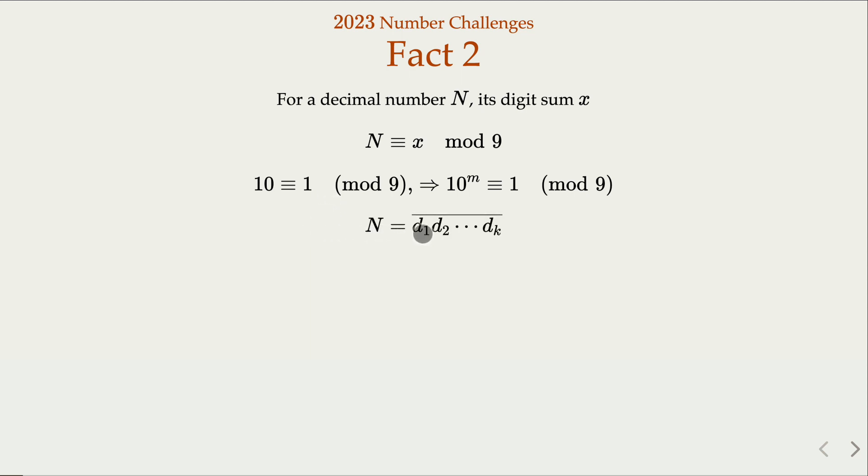Since we're dealing with decimal numbers, we have this equation here. Let's say digits d1, d2, dk, k digits, expressed in terms of 10th power, it's going to be summation of this, and each 10th power is congruent to 1 mod 9. So when we consider n mod 9, we can just replace every 10th power with 1. In other words, that's the digit sum. This proves the fact that n and x are congruent to 1 mod 9.